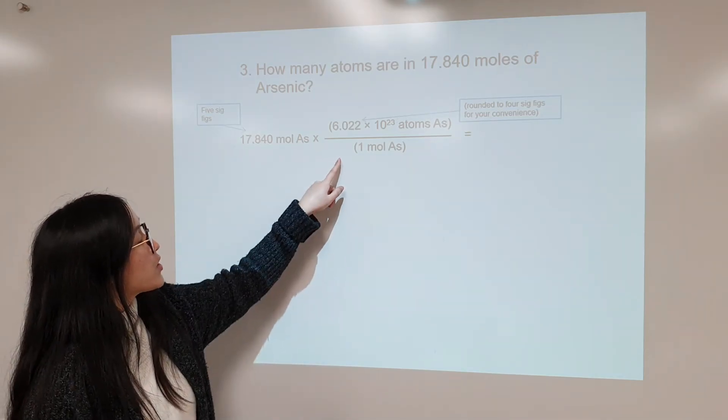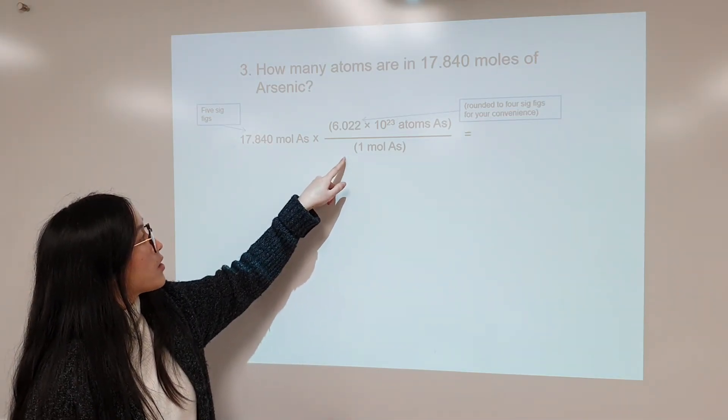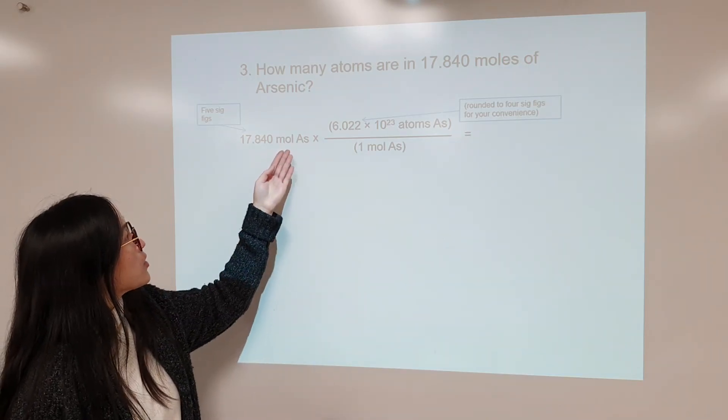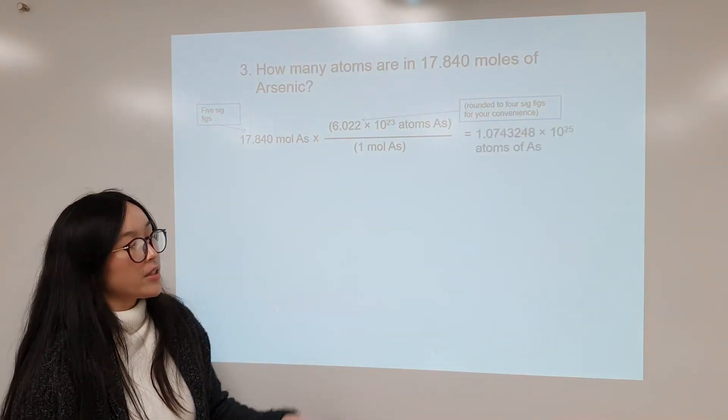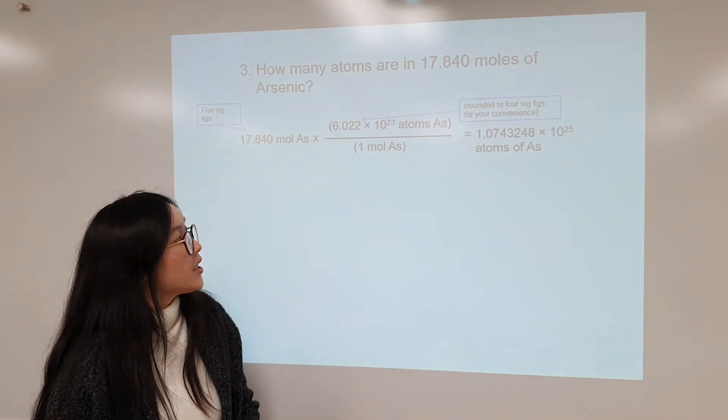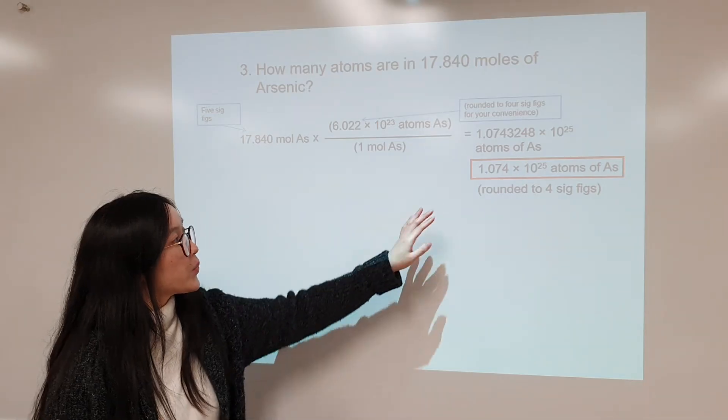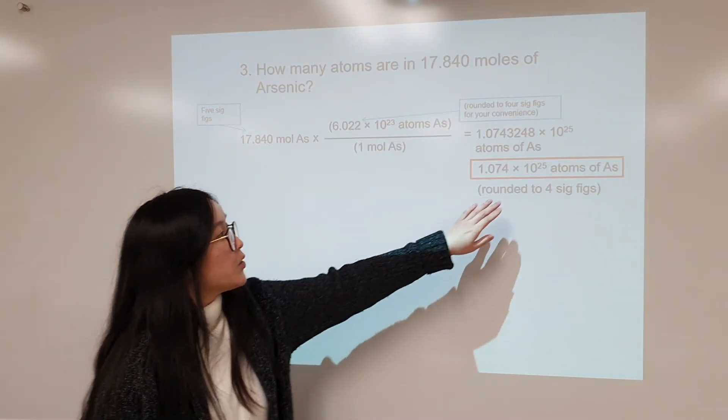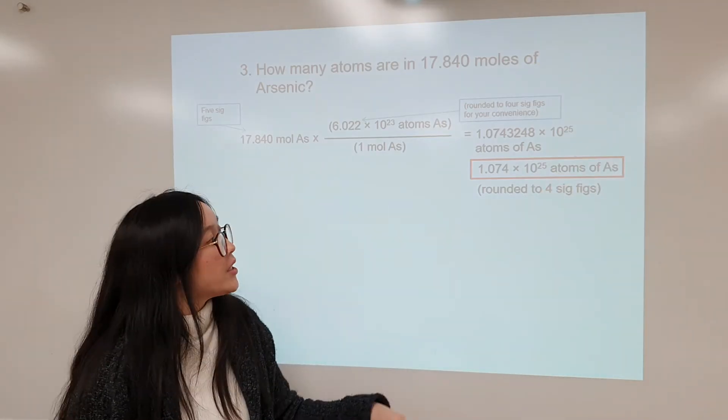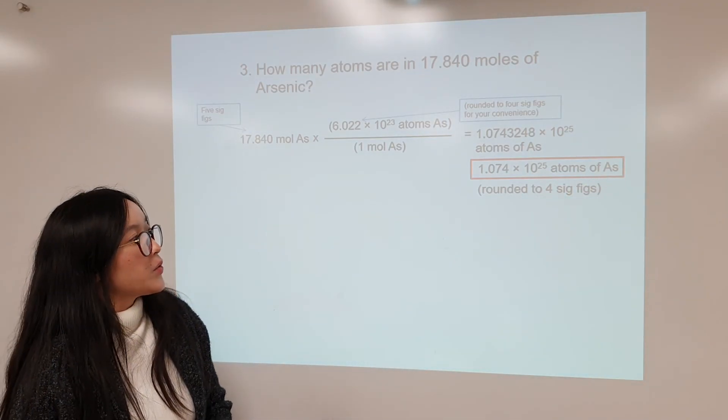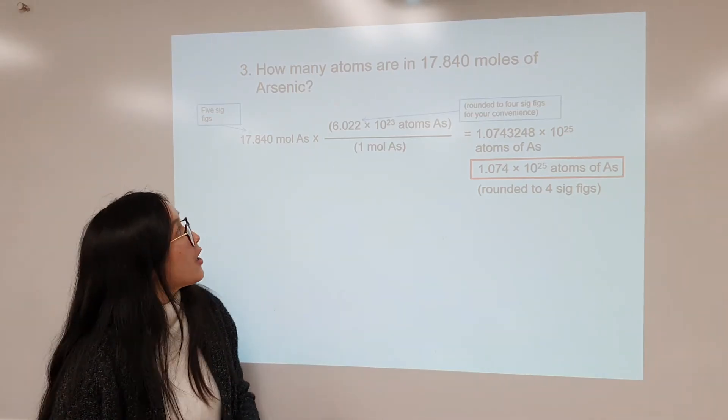And we want to set it up so that we have the conversion of one mole to atoms. We'll be able to cancel out the given moles to get our atoms at the end. And we'll get this number unrounded of atoms of arsenic. And then our rounded number will be this one, rounded to the correct sig figs. And definitely you want to include your units of atoms and also include the element symbol.